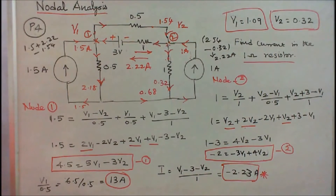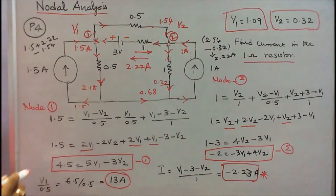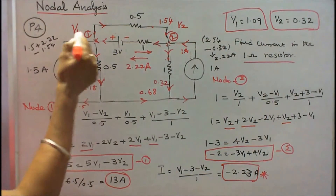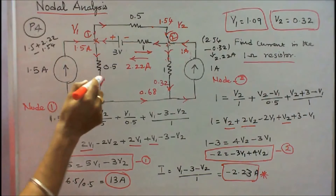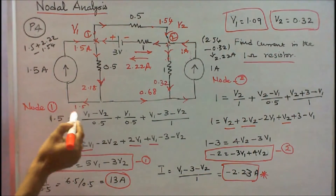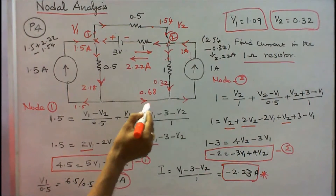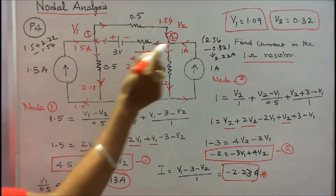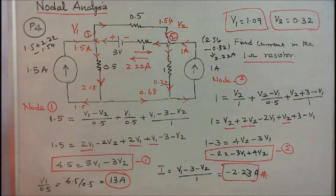Verifying Kirchhoff's current law: current towards node 1 junction is 1.5 A; current leaving is 2.18 A. The current through the 0.5 ohm branch between nodes is (V1 minus V2) divided by 0.5, which equals 1.54 amps. At the next junction: 2.18 minus 1.5 equals 0.68 amps; then 0.68 plus 0.32 equals 1 amp. At node 2: 1 plus 1.54 equals 2.54, minus 0.32 equals 2.2 amps. Kirchhoff's current law is verified.